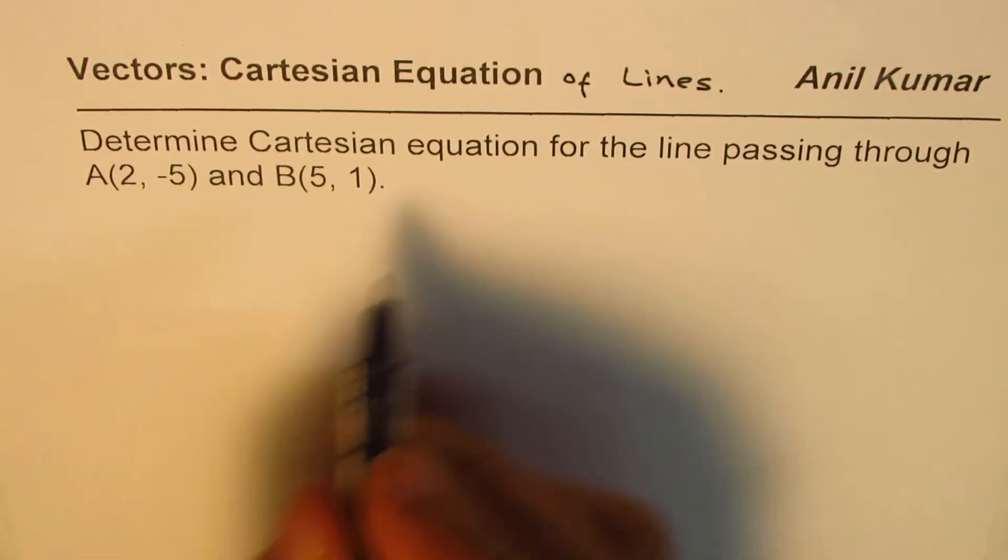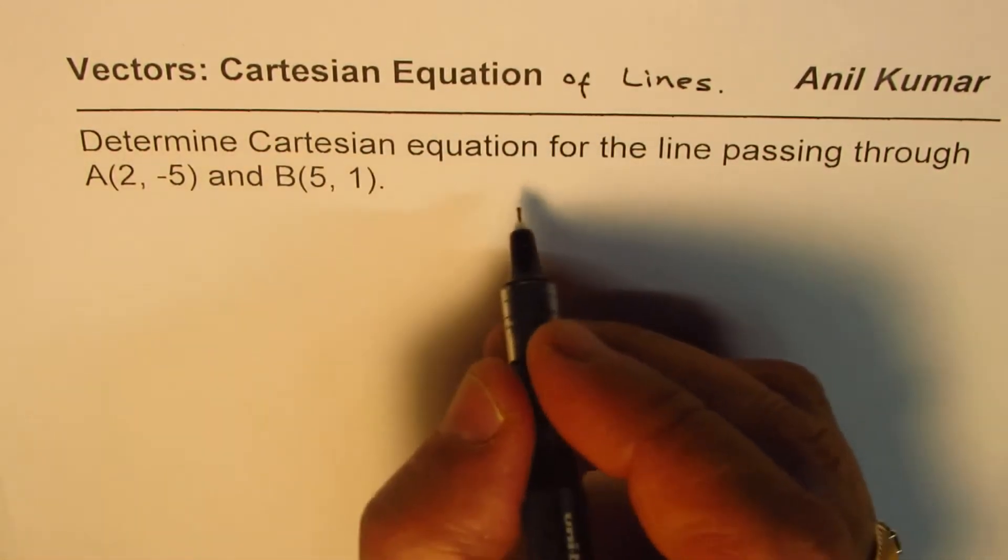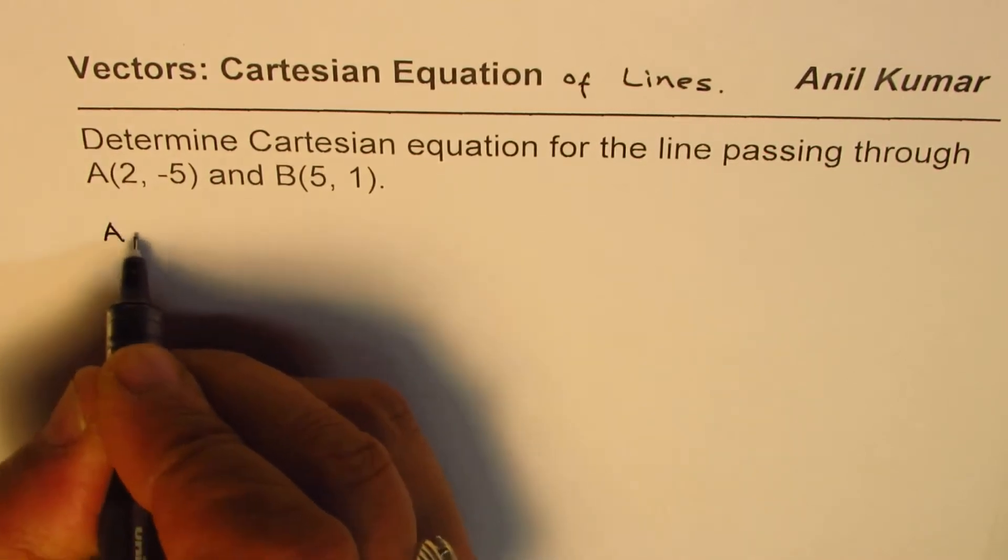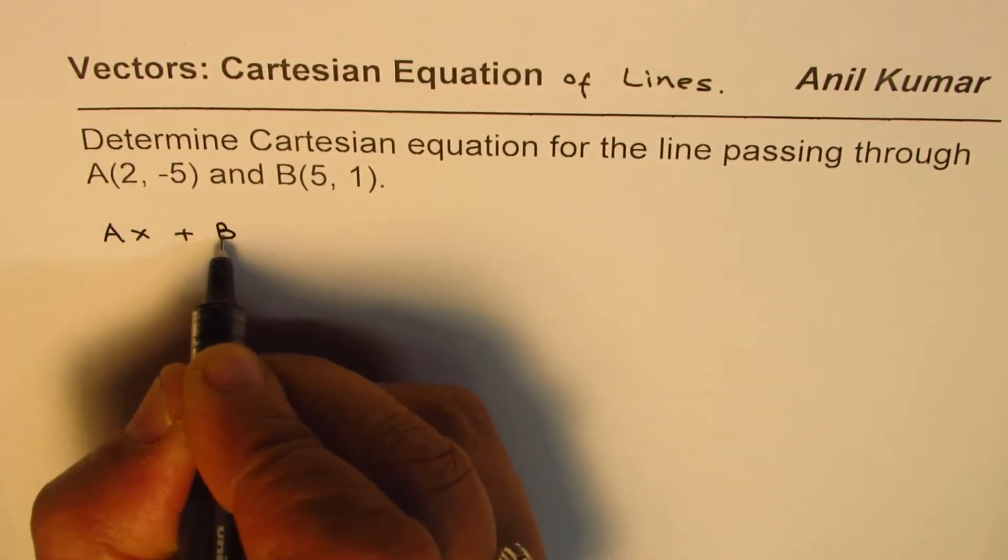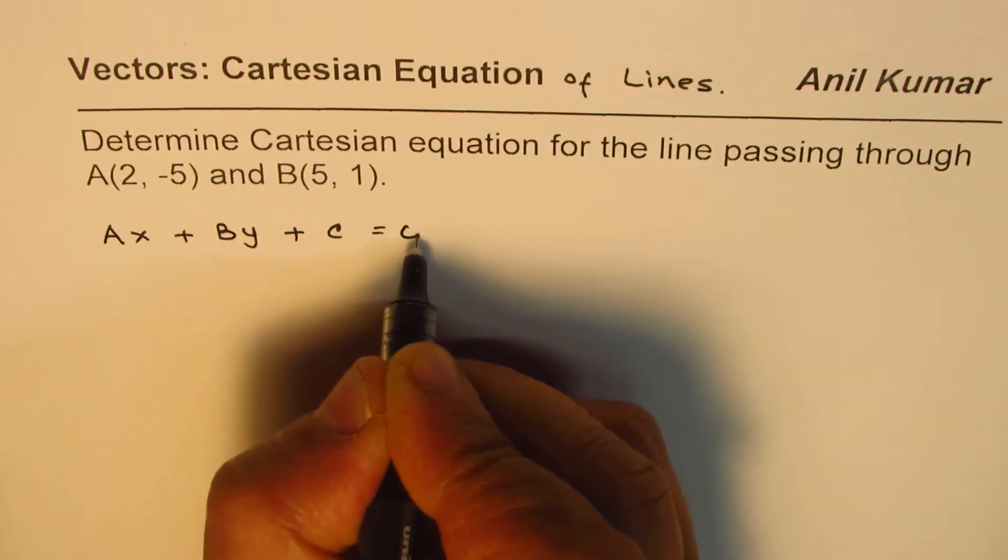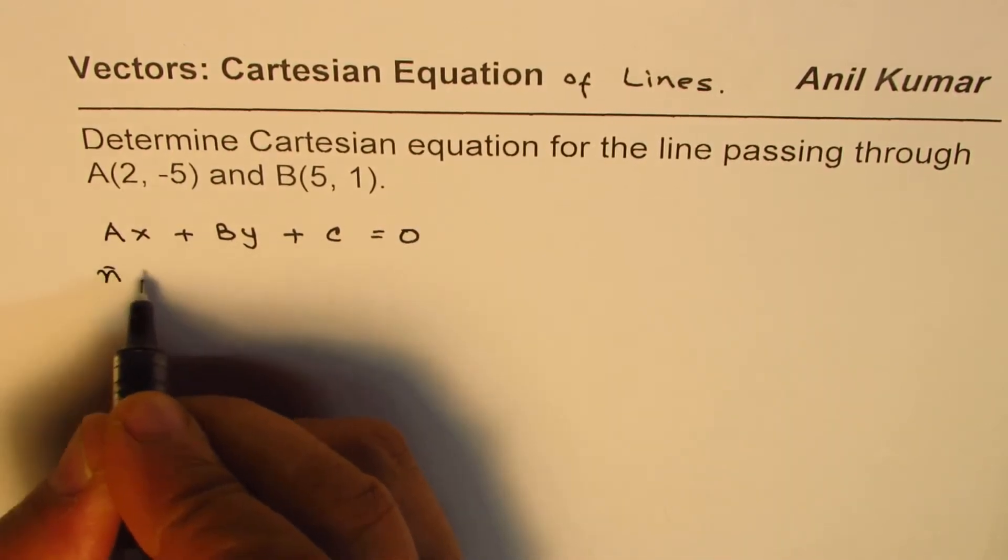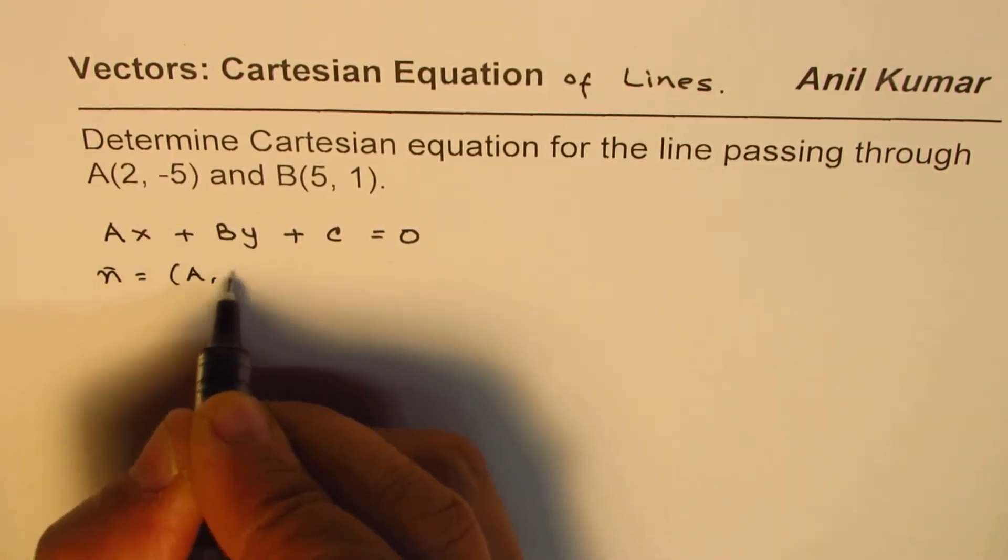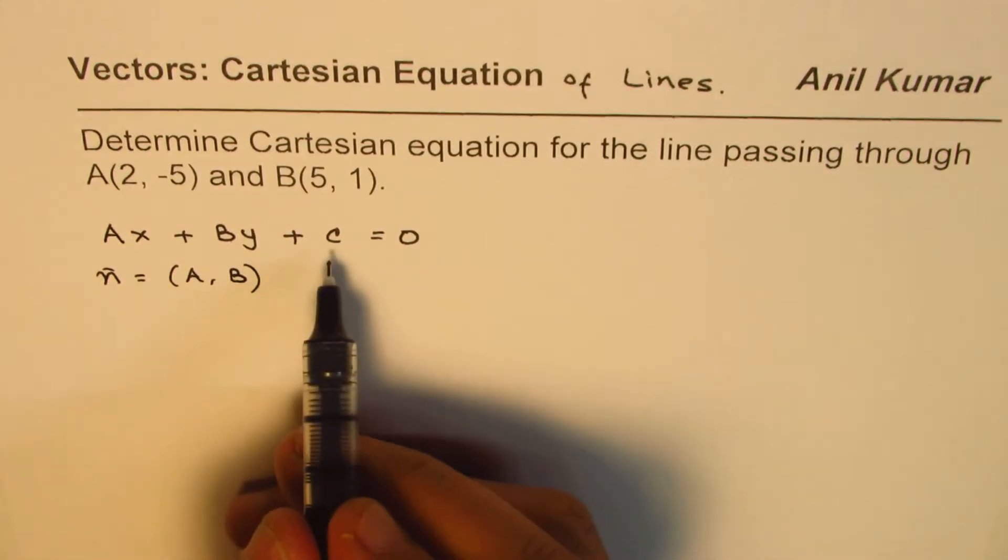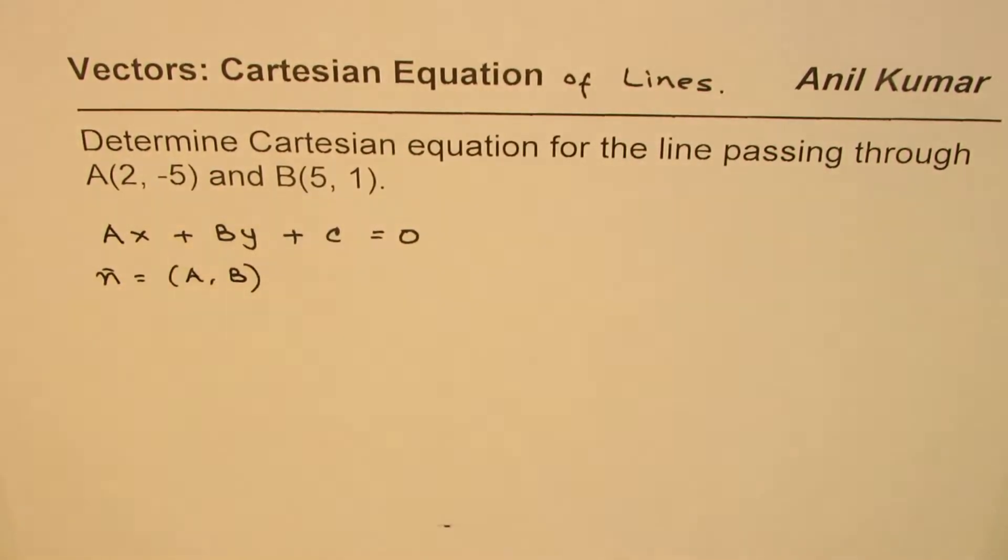In general, Cartesian equation is written in the form of Ax + By + C = 0, where the normal is A and B. We can always find the value of C using any point.